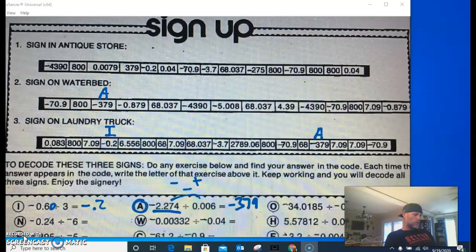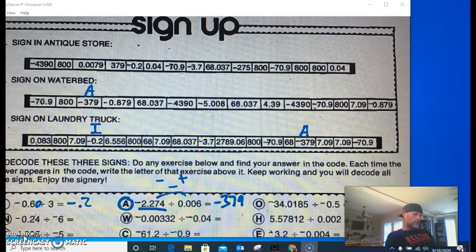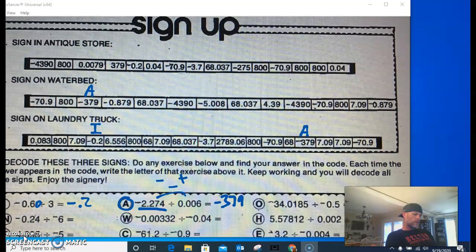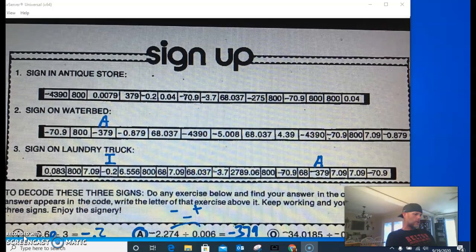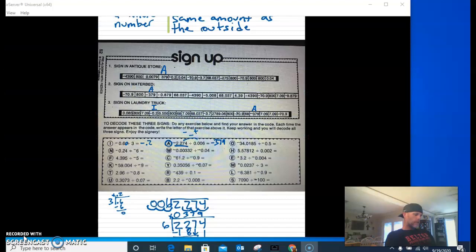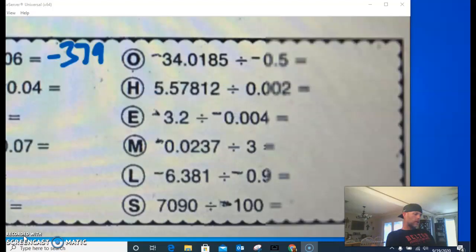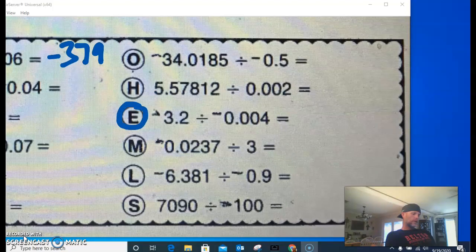Oh, and it looks like it's on all of them. So we need to find negative 379 on all of them and put the letter A. So there's not just one. So you have to go through each one and find negative 379. I did not know that. Here's another one.